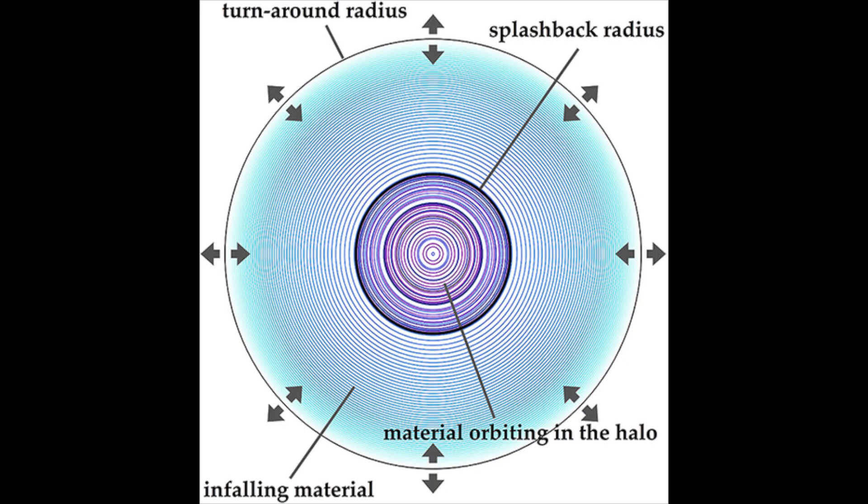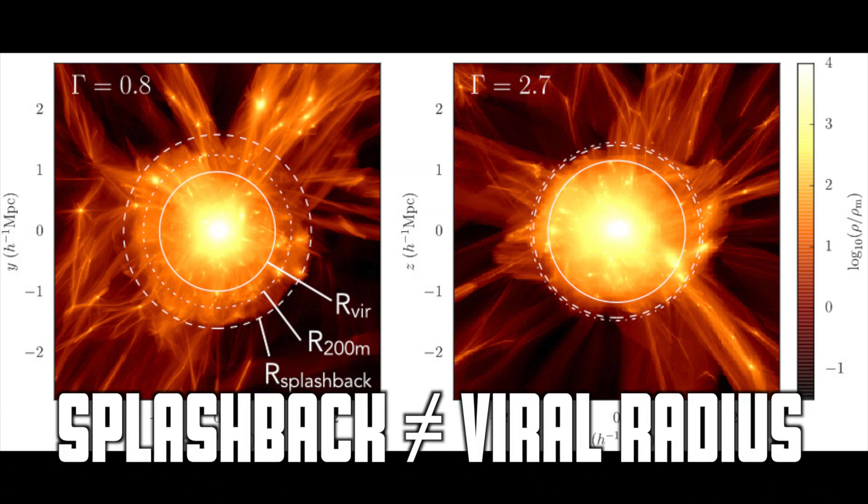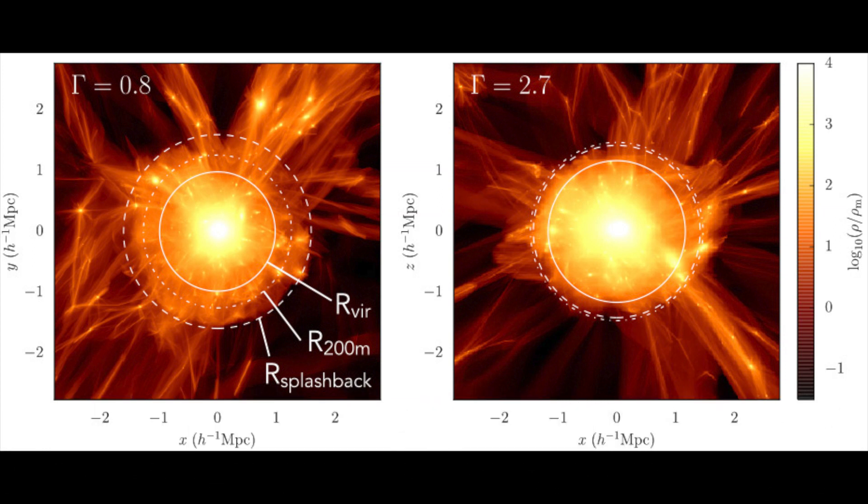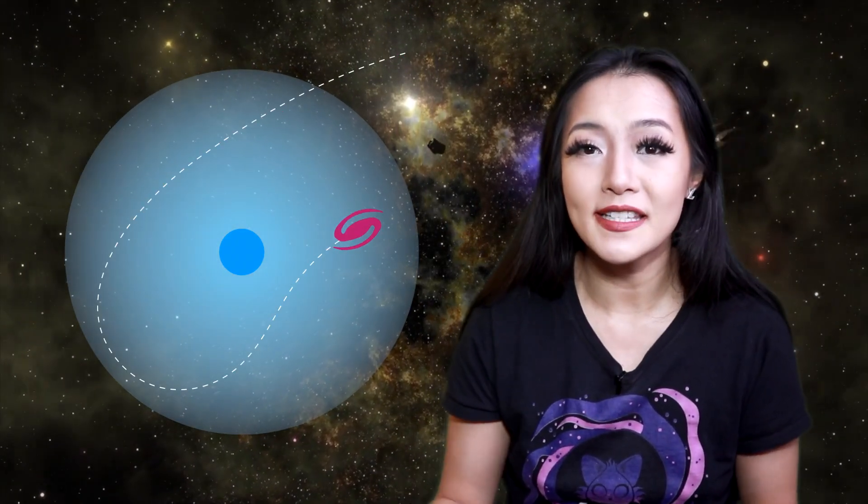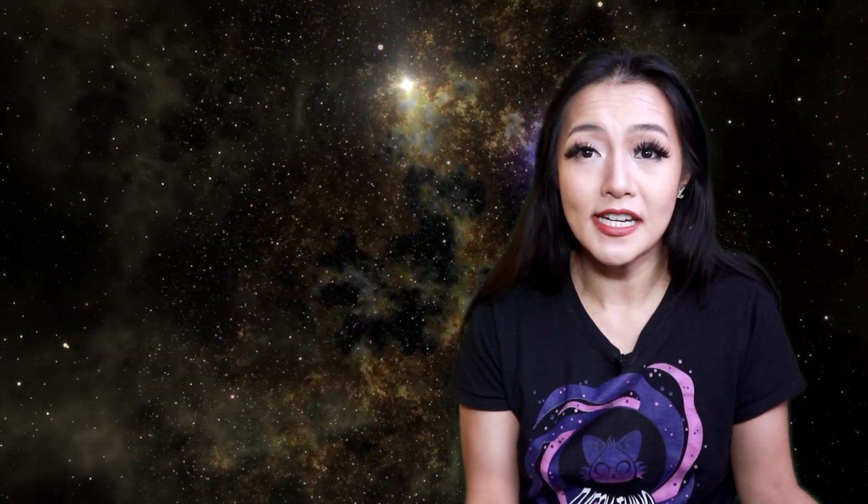The splashback radius of a galaxy cluster is the boundary that separates the dense, virialized region of the galaxy cluster from its outer regions. But it's important to note that it's not the same as the virial radius, the region where the average density of a cluster is some characteristic value. No, the splashback radius marks a transition where matter reaches its maximum radial velocity and starts moving away from the cluster center. This can be two to three times larger than the virial radius.